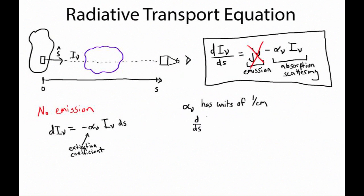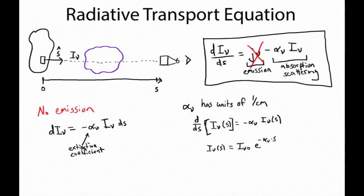If the derivative with respect to s of I-sub-nu is equal to a constant times I-sub-nu, then the solution has the form: I-sub-nu as a function of s equals I-sub-nu at some start value times e to the minus alpha-nu times s — the extinction coefficient times the length s. This is saying that if we put radiation through a cloud of absorptive material, there will be an exponential falloff in intensity, because the attenuation at each point is proportional to the intensity at that point.